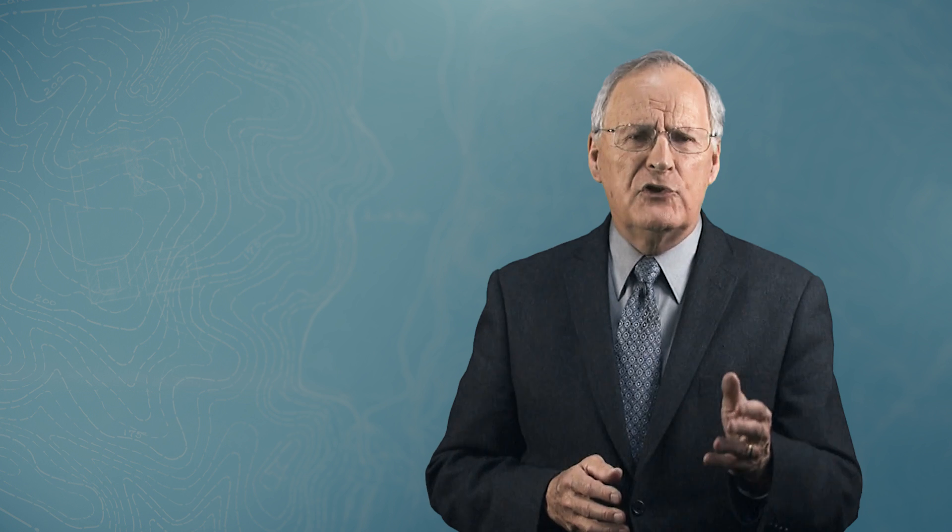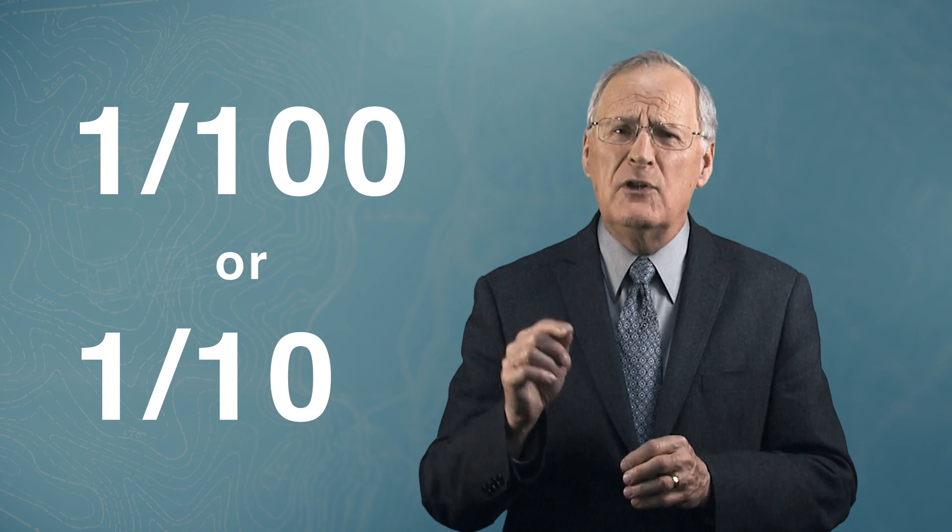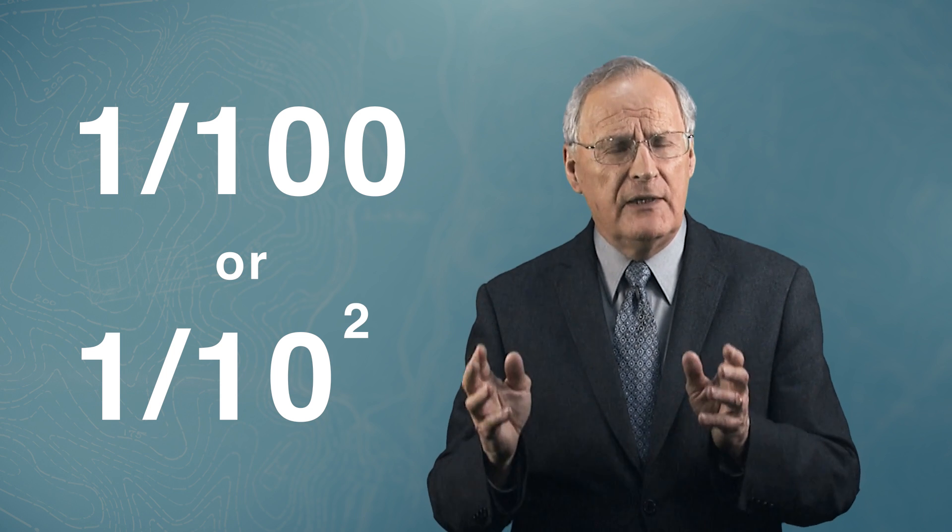In order to show this, let's first express chances in a different way. We know that if your chances are 1 out of 100, that can be written as 1 over 100, or 1 over 10 to the power of 2, 2 representing 2 zeros. 1 out of 1 million can be written as 1 over 10 to the power of 6, because there are 6 zeros.